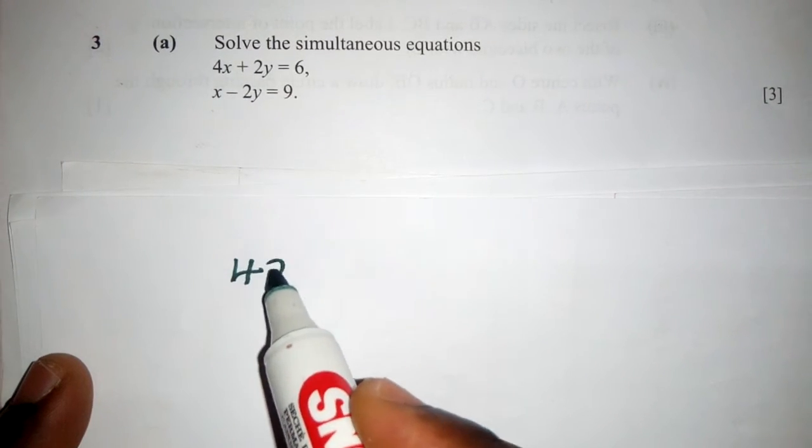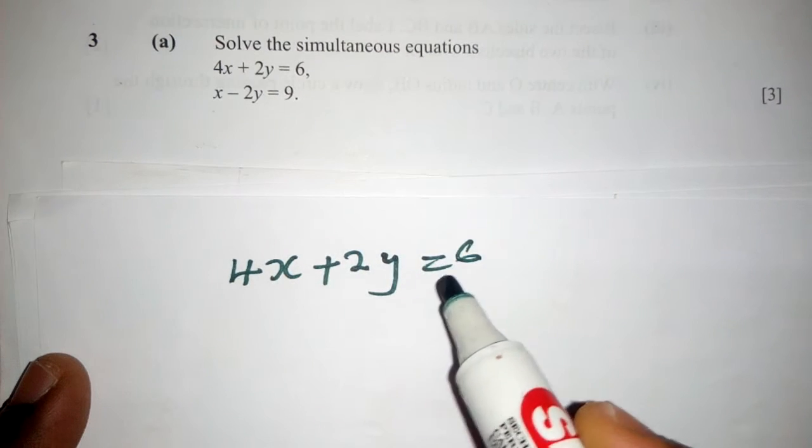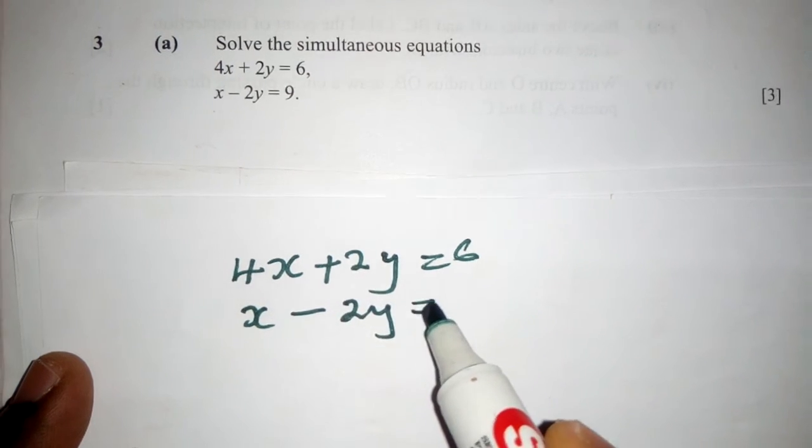So we copy the equation the way it looks. Then here, x minus 2y is equal to 9.